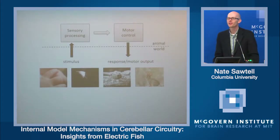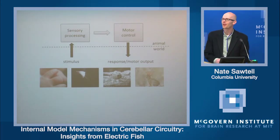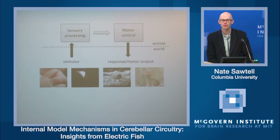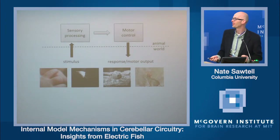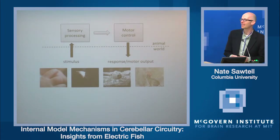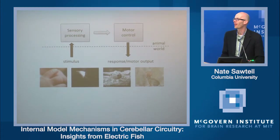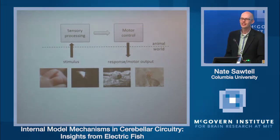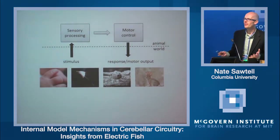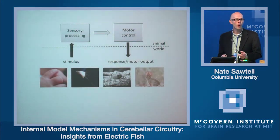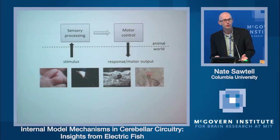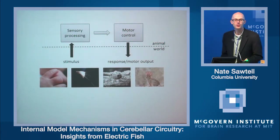For most animals, movements or sensory information is acquired in the context of movements or exploration. Think of active touch — exploring a surface with your fingers, or a rat or mouse exploring with his whiskers. Think of eye movements in vision or movements of the head and ears in hearing. In all of these cases, movements allow animals to acquire more and better information about the world, but they also pose a fundamental challenge for sensory systems.